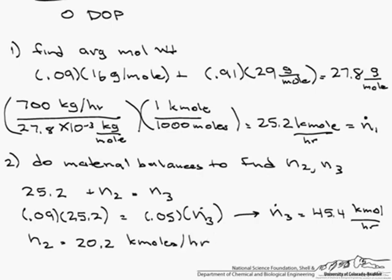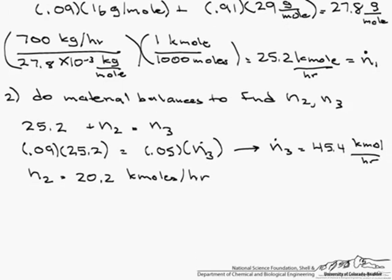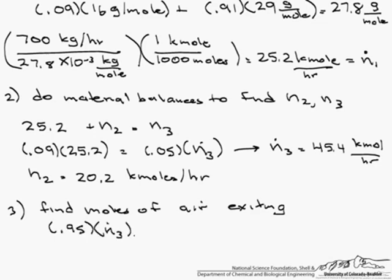So the next thing that our question asks is how do we find the mole fractions coming out in the stream of both oxygen and nitrogen? So the first thing we have to do, because the oxygen and nitrogen are in the air, is we have to find the moles of air exiting. So that's just 0.95 times N3, which is 45.4 kilomoles per hour, and that's 43.1 kilomoles of air.